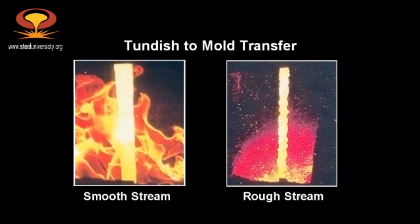Here in this slide, we see an example of a smooth stream and a rough stream during billet casting. During the casting of steel billets, it is very often the case that refractory nozzles cannot be used to protect the steel stream because the casting mold is too small to accommodate submerged entry nozzles. Under these circumstances, we need to protect the stream using a gas shroud. The nature of the stream — whether it's smooth or rough — will influence the behaviour of the fluid flow in the casting mold, and the character of the stream can change during the casting operation, affected by conditions in the tundish.